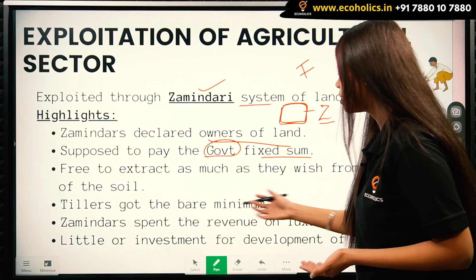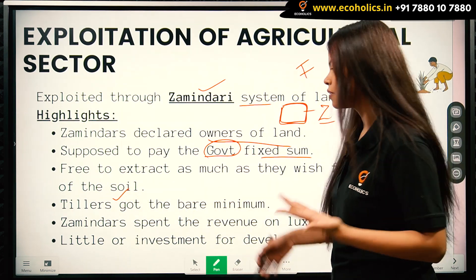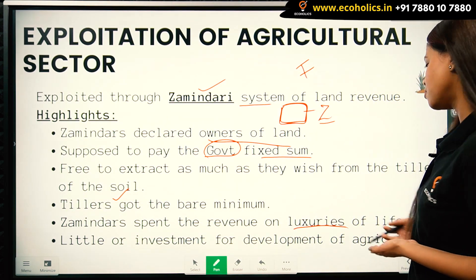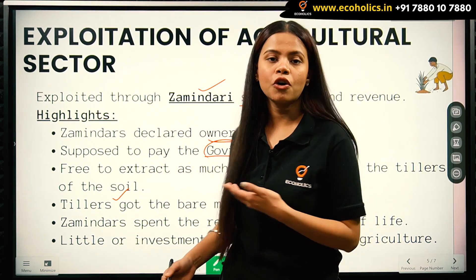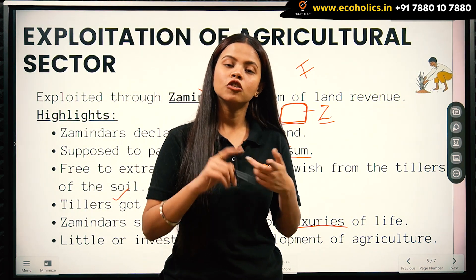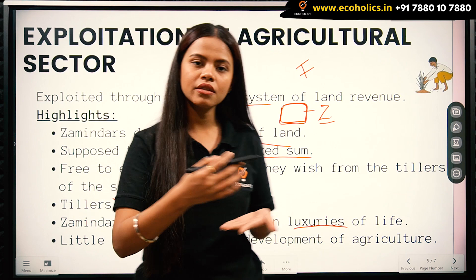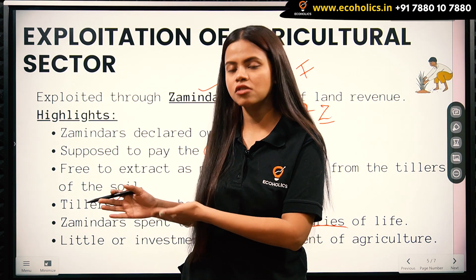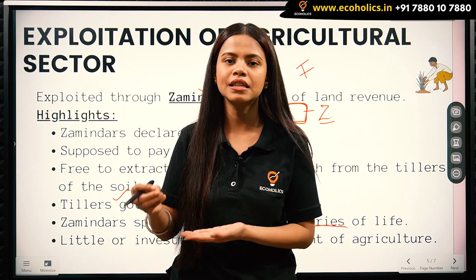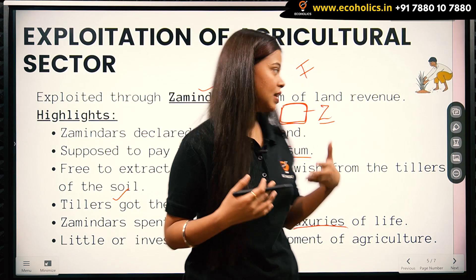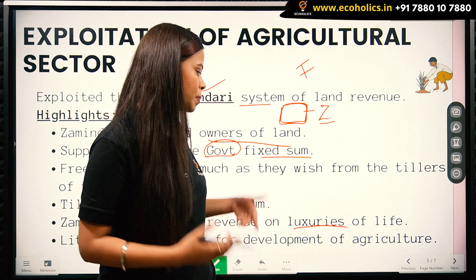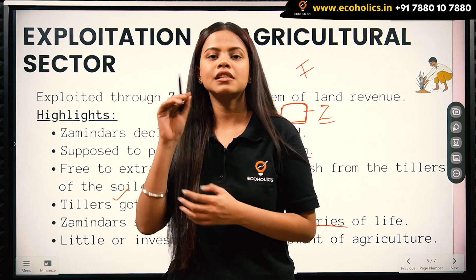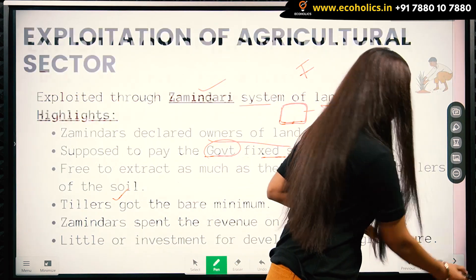The tillers — the farmers — received only the bare minimum. Little or no investment was made for the development of the agricultural sector. The zamindars collected a large revenue from the peasants and spent it on the luxuries of life. This is how the exploitation of the agricultural sector took place under the zamindari system.